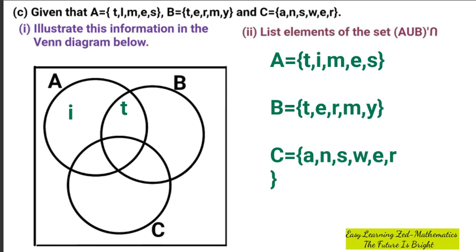Now let's go to element M. Is M found in B? Yes. Is M found in C? No. So M is only found in set A and set B. Therefore, it's going to be on the intersection of A and B, which is here.